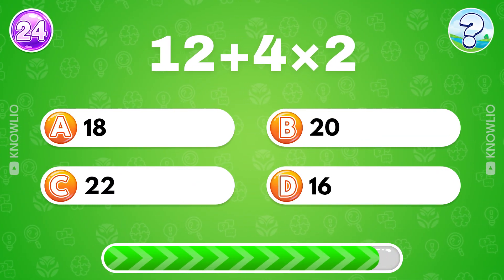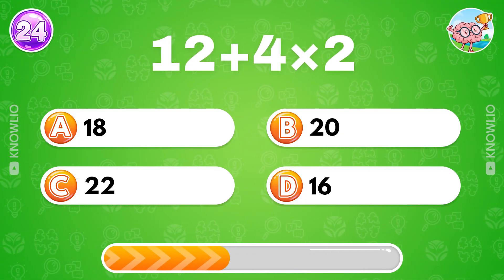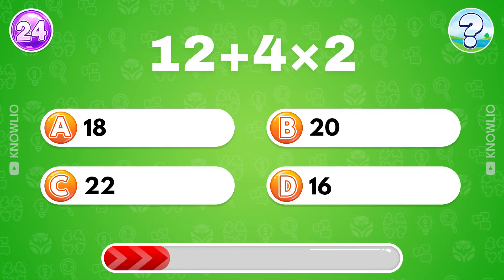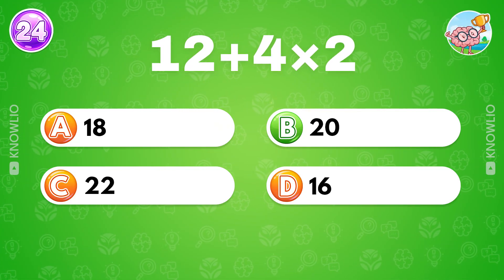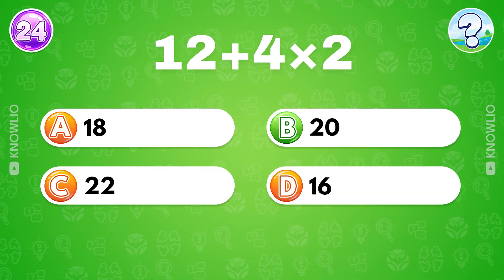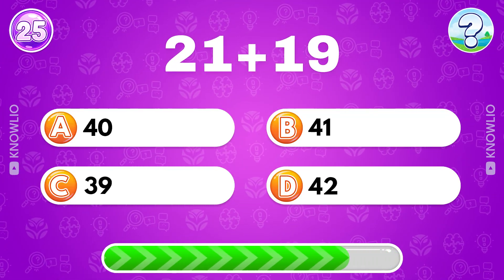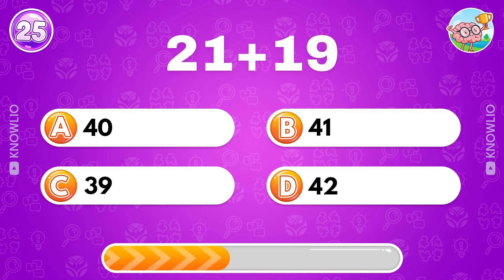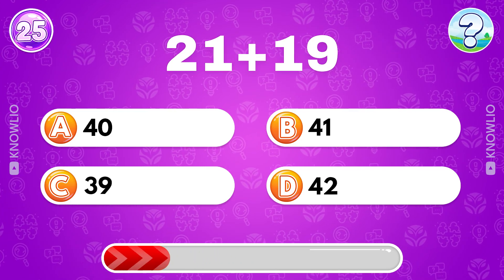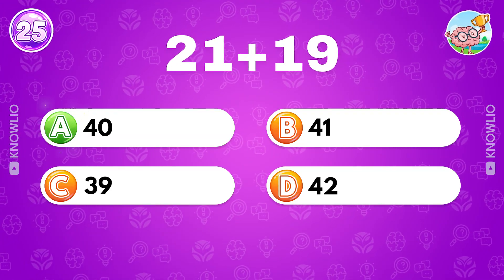Trick one: 12 plus 4 multiplied by 2? Answer B, 20. 21 plus 19? Answer A, 40.